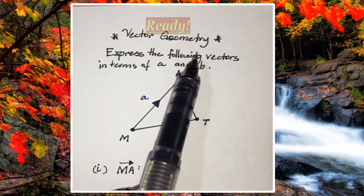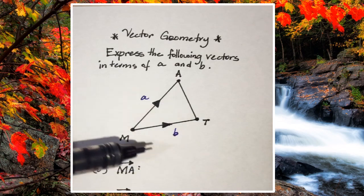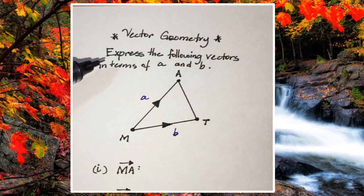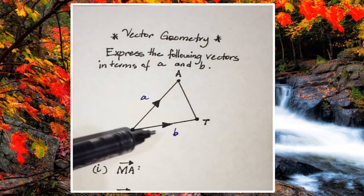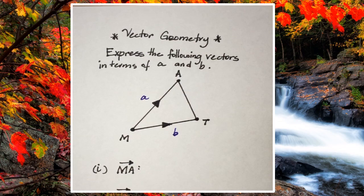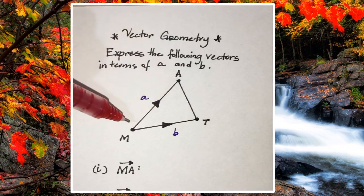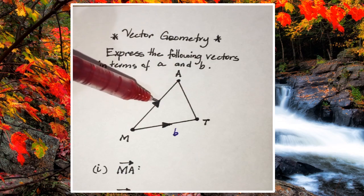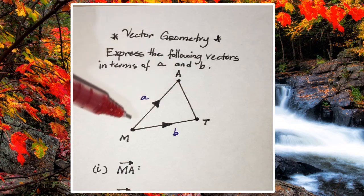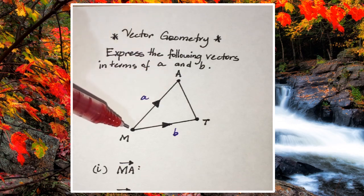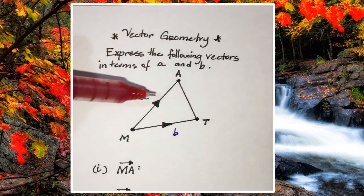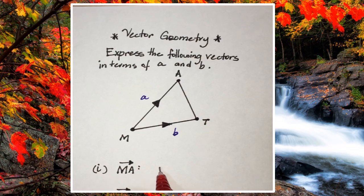We're looking at vector geometry. Notice the shape — it's a triangle and we're dealing with triangle math. It says express the following vectors in terms of a and b. Here is a and here is b. The first vector they're asking us to figure out is m to a. We're starting at m and going to a, moving with the vector, so the arrow points this direction. So m to a is simply just a.